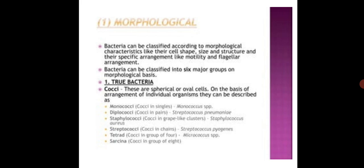These are spherical or oval cells. On the basis of arrangement of individual organisms, they can be described as Monococci, Diplococci, and Staphylococci.